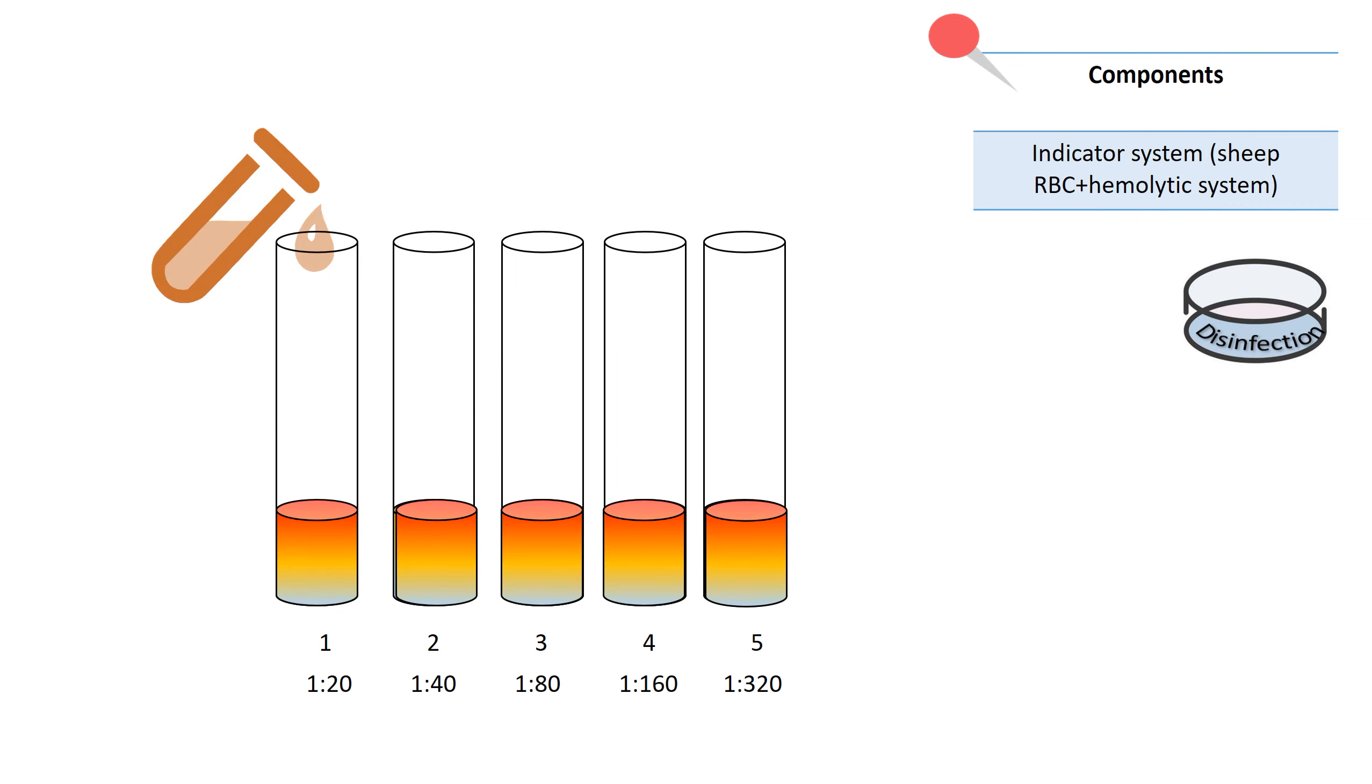Next, third step, we add indicator system, consisting of sheep RBC and hemolytic system. We add in all tubes and after 45 minutes incubation at 37 degrees.